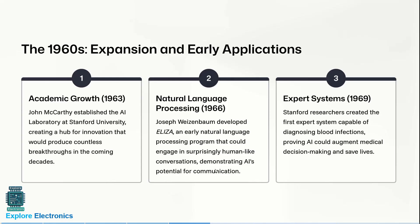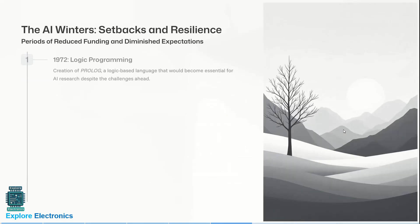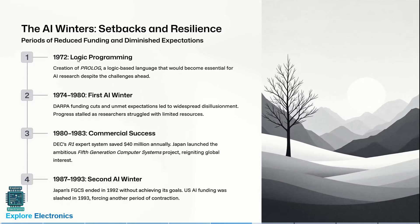In 1969, Stanford researchers created the first expert system capable of diagnosing blood infections, proving AI could augment medical decision-making and save lives. In 1972, logic-based programming came into existence with Prolog, a logic-based language that would become essential for AI research despite the challenges ahead.